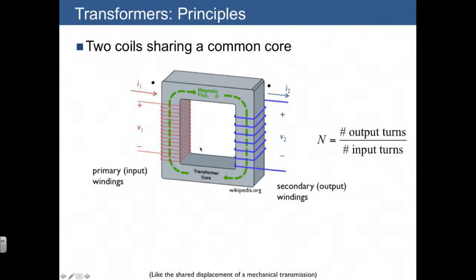A transformer consists of a ferromagnetic material, such as shown here, called a core, and two sets of windings where a wire is wound in a coil around two different sides of the system.